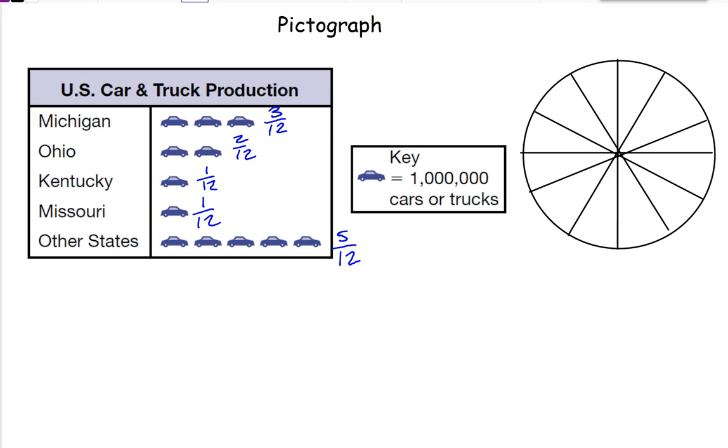So three twelfths of this circle should be for Michigan. I'm going to highlight three of the twelve pieces, and that's Michigan. Ohio is two twelfths, so I highlight two of those. Kentucky is one twelfth, so one piece. Missouri is one twelfth. And then all the other states is the rest of the circle. That's how we change a pictograph into a pie chart or a circle graph.